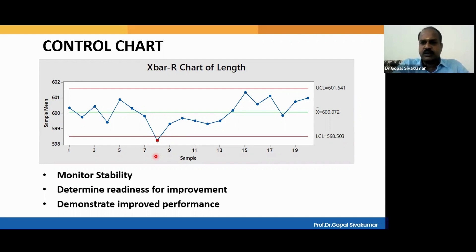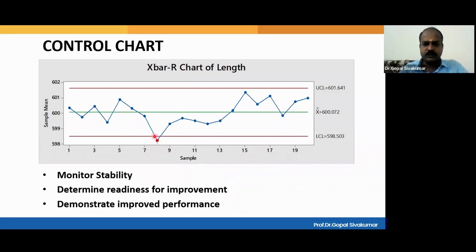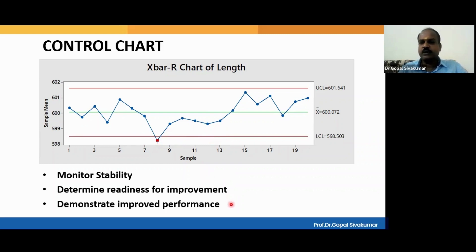There are three main uses of a control chart. Number one, it helps you to monitor the stability of the process. If the process is stable, then the process is ready for the next level of performance — so readiness for improving a process to the next level of performance can also be understood by looking at the control chart. Please think of improving a process only when you get all the points falling inside the control limit. Whenever you see an out-of-control condition, the process needs to be stabilized before improving it.